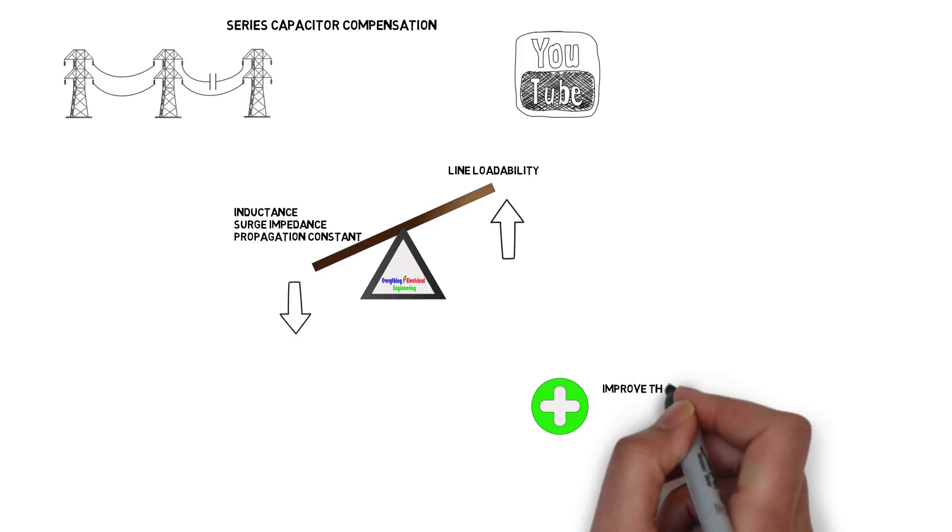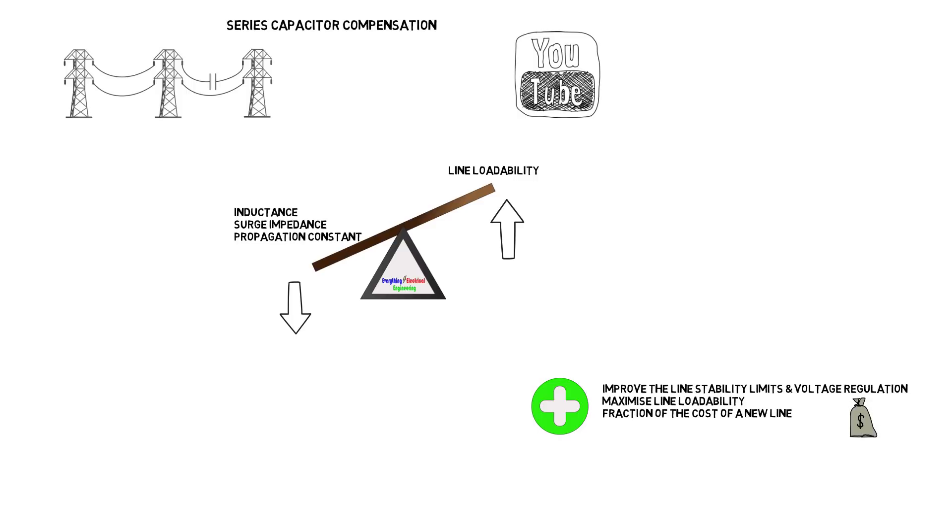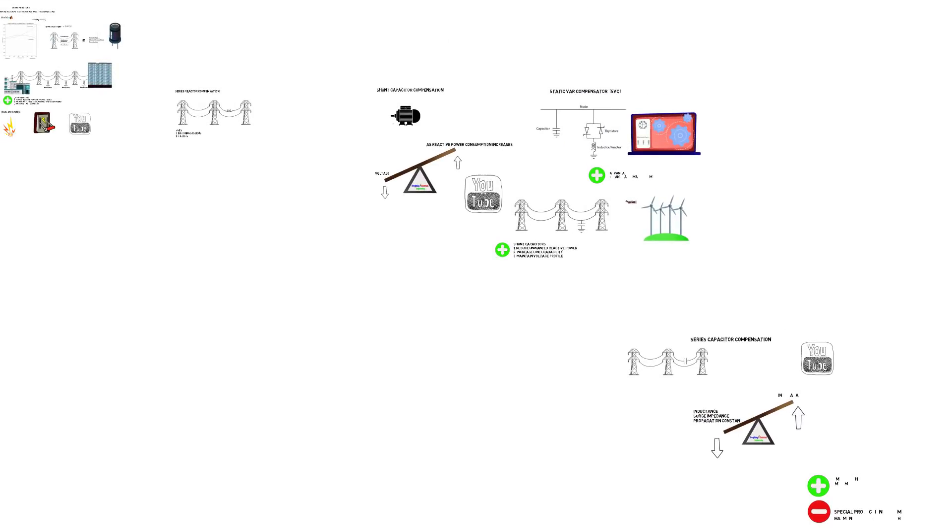Series capacitor compensation will improve the line stability limits, voltage regulation and maximize the line loadability for a fraction of the cost of a new transmission line. However, there are some drawbacks to this configuration, such as having the full current going through the capacitor will cause harmful overvoltages during certain fault conditions. Special protection switchgear to automatically detect and bypass high currents during fault conditions is required. There are other issues with harmonics and low frequency oscillations, which need to be taken into consideration, as this may negatively affect turbine generators and mechanical systems.